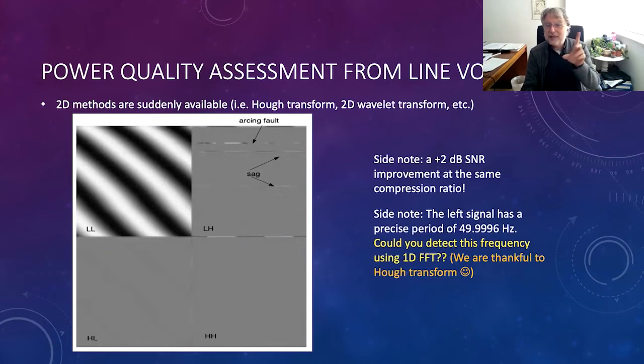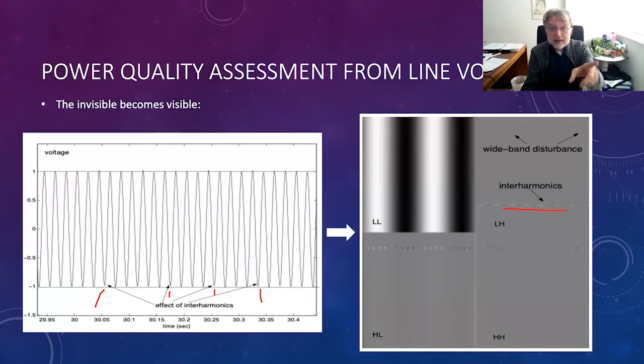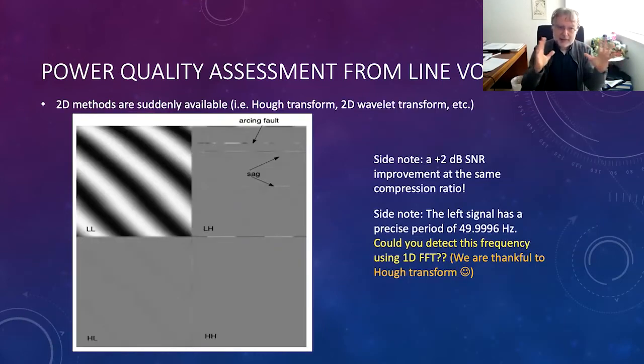By the way, this is also very suitable for compression. The two-dimensional interpretation gives us two decibels of signal-to-noise ratio improvement at the same compression ratio. And by the way, this thing corresponds to a line frequency of 49.9996 hertz, which is impossible or very difficult to detect with one-dimensional FFT-based methods. But when you measure this inclination angle, you will immediately detect it from trigonometric formulations.